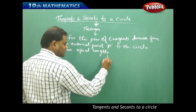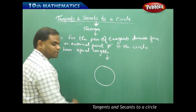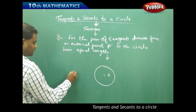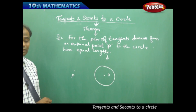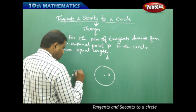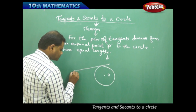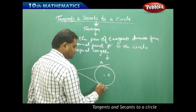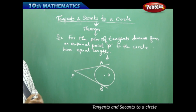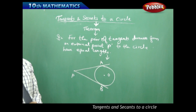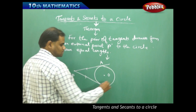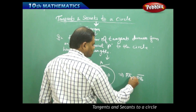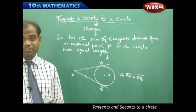The statement can be understood more clearly through a diagrammatic representation. Geometrically, if this is a circle with center O, then from an external point P outside the circle, we can draw only two tangents — tangent one and tangent two — touching the circle at points A and B respectively. The statement says that PA is equal to PB.